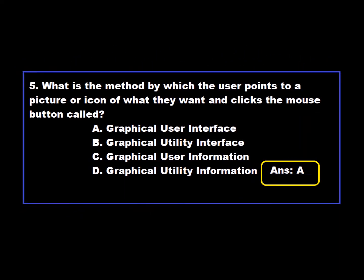Question 5: What is the method by which the user points to a picture or icon of what they want and clicks the mouse button called? Option A: Graphical User Interface. Option B: Graphical Utility Interface. Option C: Graphical User Information. Option D: Graphical Utility Information. Option A is correct — Graphical User Interface is the method by which the user points to a picture or icon of what they want and clicks the mouse button.